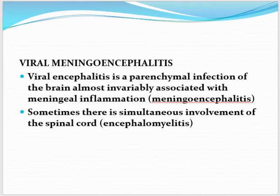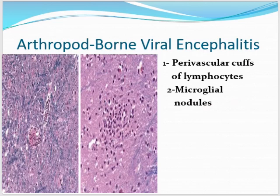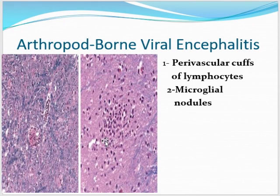Viral encephalitis is a parenchymal infection of the brain almost invariably associated with meningeal inflammation, termed meningoencephalitis. When the spinal cord is simultaneously involved, this is called encephalomyelitis. In arthropod-borne viral encephalitis, there is a perivascular cuff of lymphocytes around vessels, necrosis of brain tissue, and microglial nodules formed by glial cells surrounding areas of necrosis.